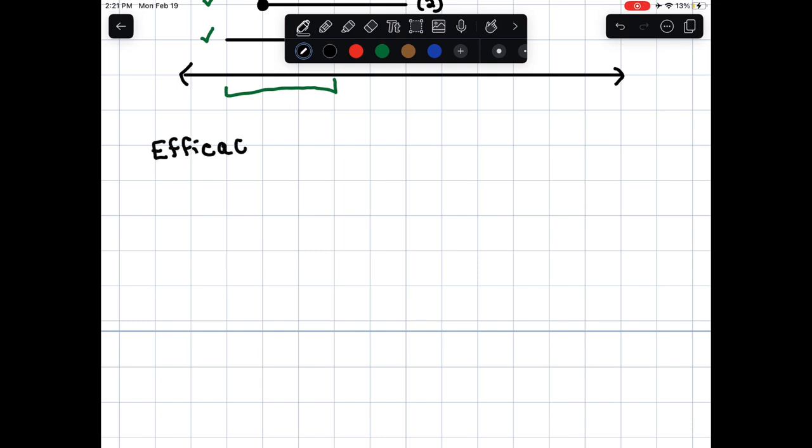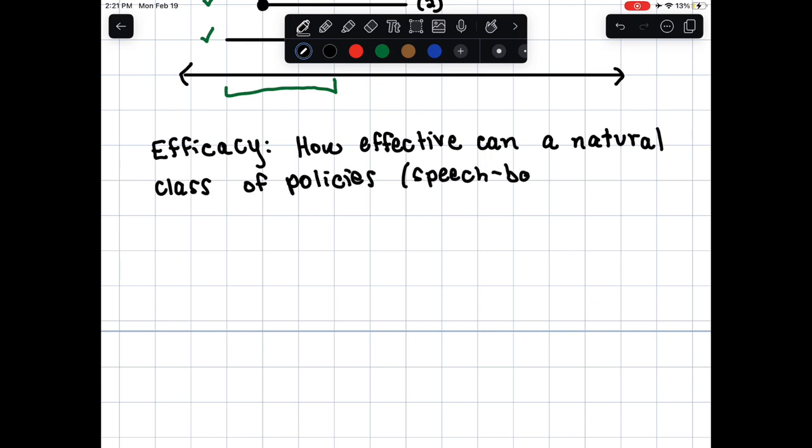In our paper, we use our model to characterize how effectively a natural class of moderation policies can be used to sustain large communities. The class of policies we consider are speech-based, as in content moderation occurs based on content produced by users, not based on what they like to consume. And convex in the sense that if speech x and speech z is allowed, any point between x and z should be allowed as well.